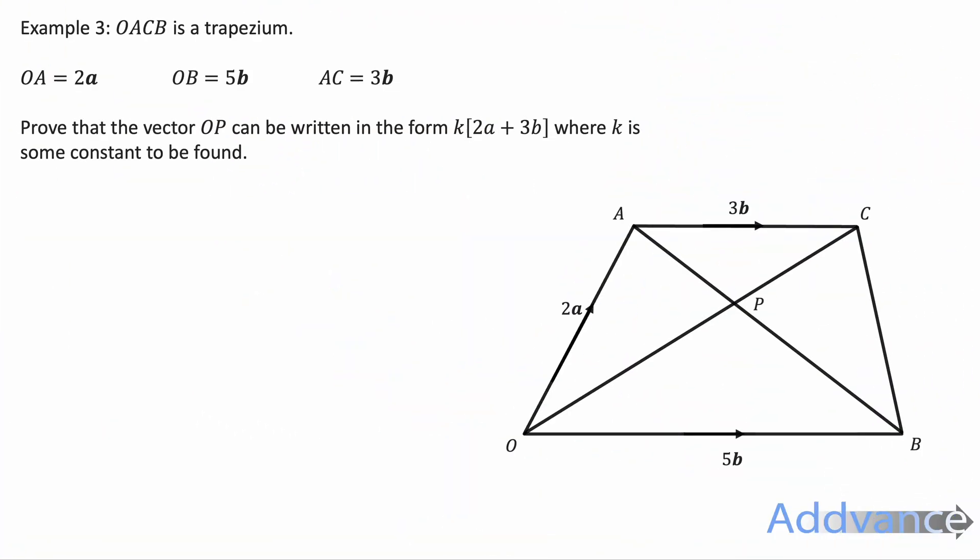Our final example today, we are given a trapezium and we are also given the midpoint of the trapezium is P. The vectors are already drawn on the diagram and we want to prove that the vector OP can be written in the form k times 2a plus 3b where k is some constant to be found.